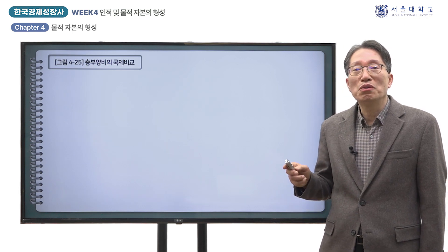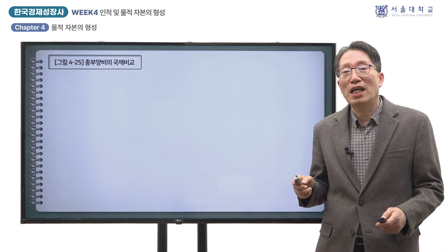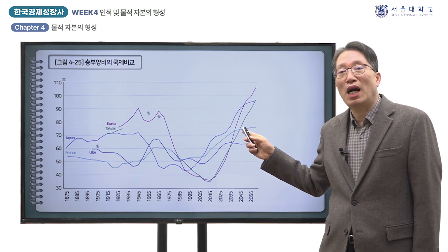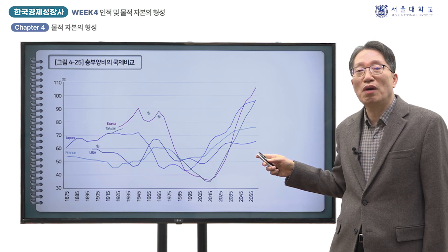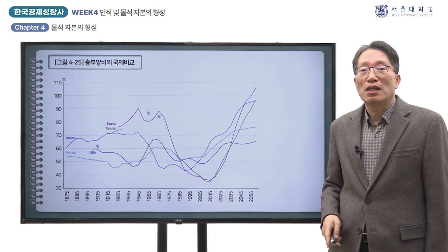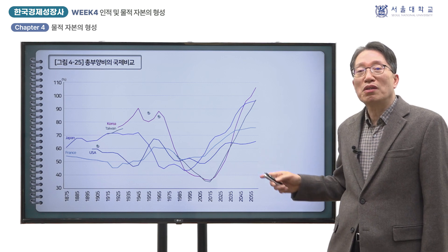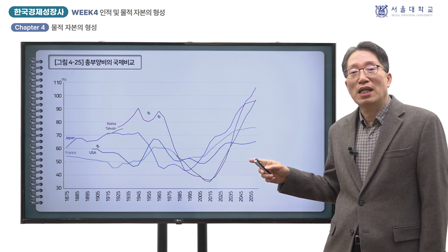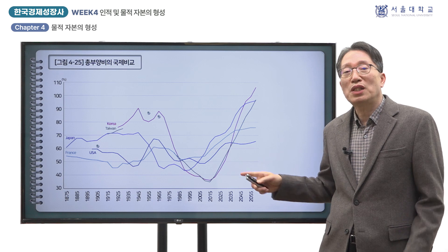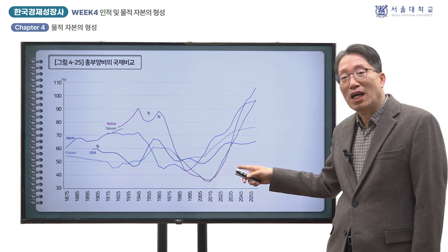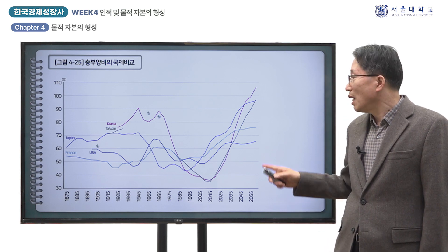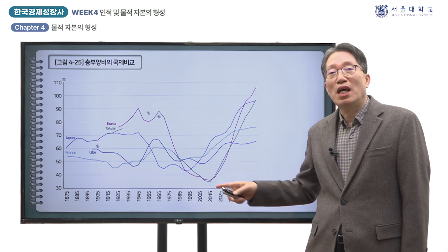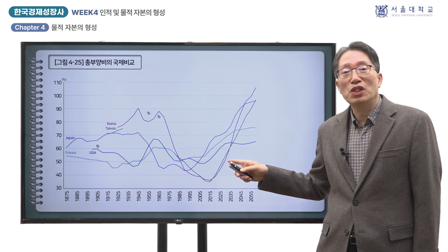이러한 인구의 연령별 구성 변화는 동아시아의 다른 나라에서도 유사하게 나타났습니다. 그림 4-25는 일본과 대만, 그리고 미국과 프랑스의 총 부양비 추이와 전망을 비교한 것입니다. 대만은 한국과 거의 유사한 U자형의 추이를 보이고 있습니다. 일본은 한국이나 대만보다 20년 정도 앞서서 U자형이 나타났지만, U자형의 골의 깊이가 다소 얕았습니다. 미국과 프랑스의 총 부양비에서는 동아시아 국가에서 나타난 바와 같은 U자형이 뚜렷이 보이지 않습니다.